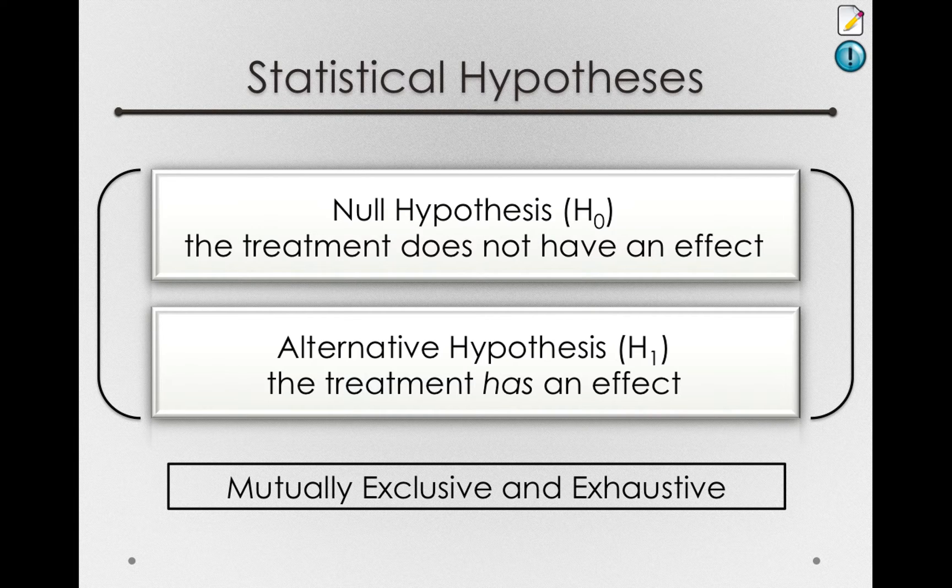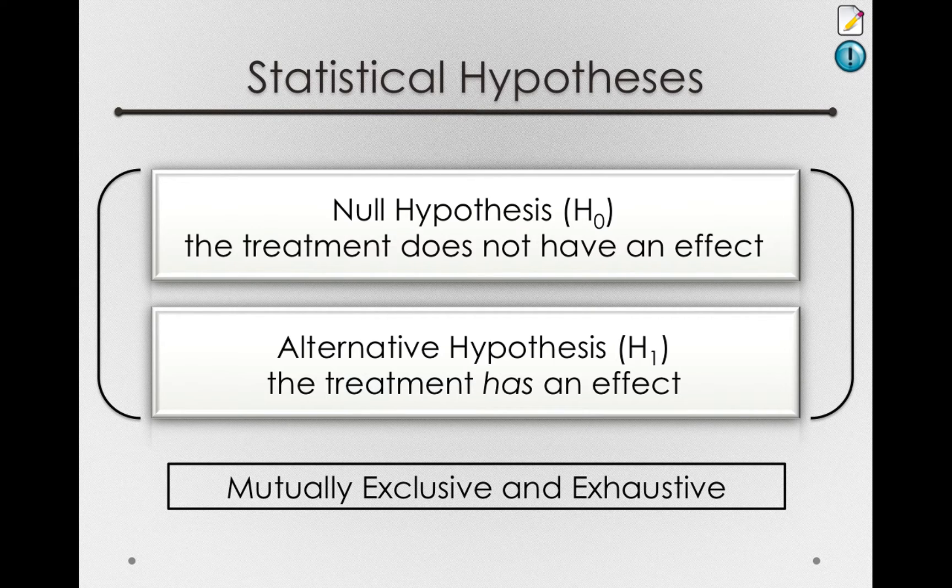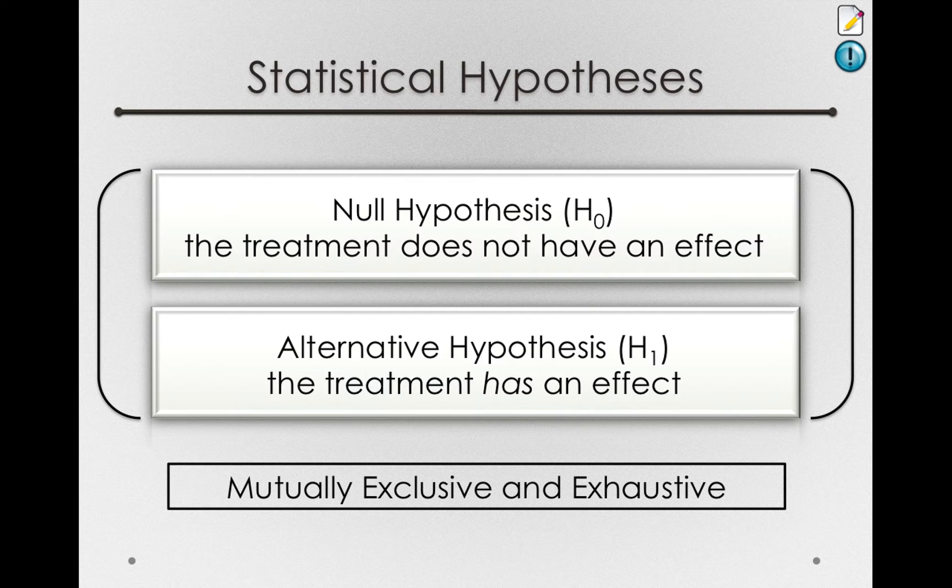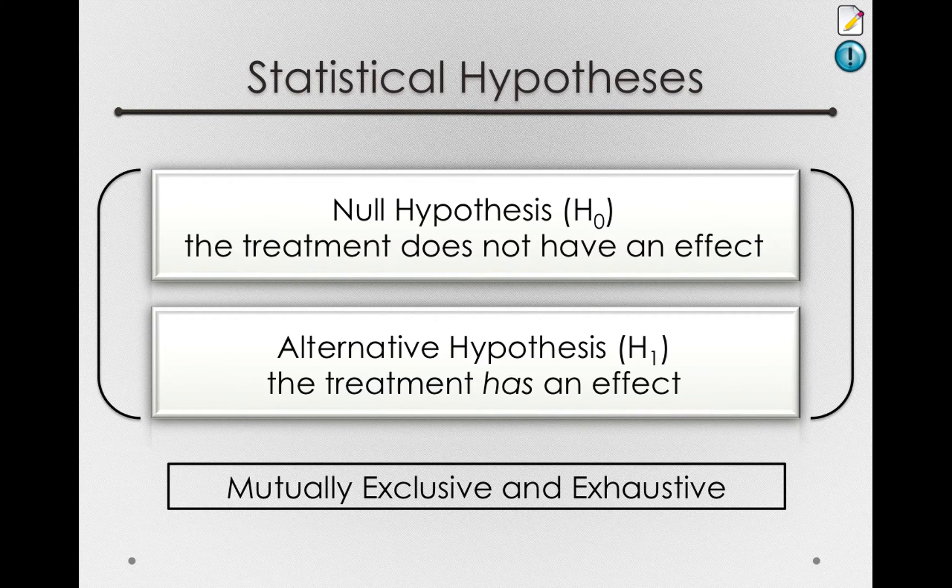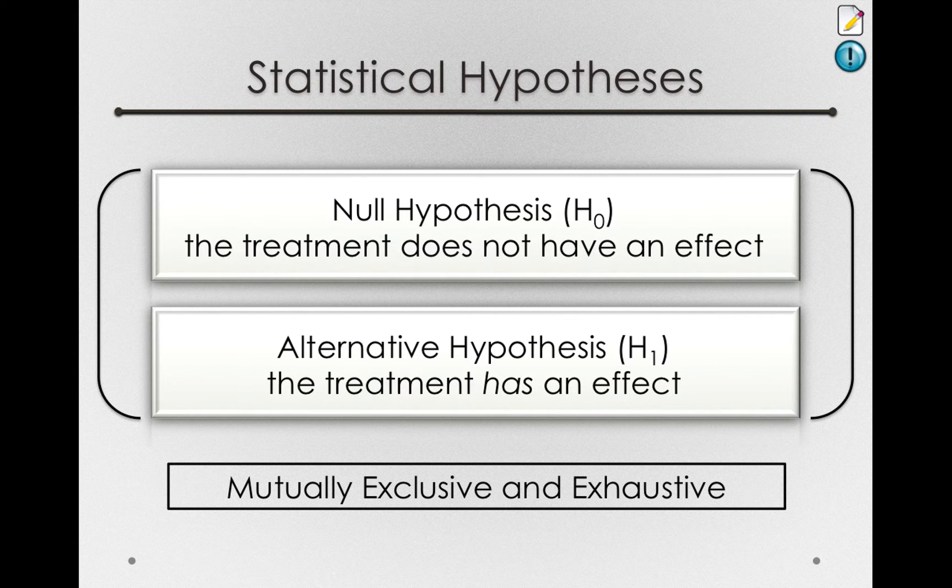For instance, if we flip a coin 100 times and get 100 heads, the null hypothesis could be true, but it would be a very unlikely event. The null hypothesis could be true, but it's not a reasonable explanation given what we know about what happens when we flip coins.